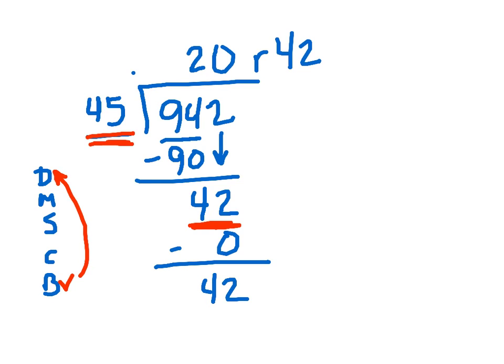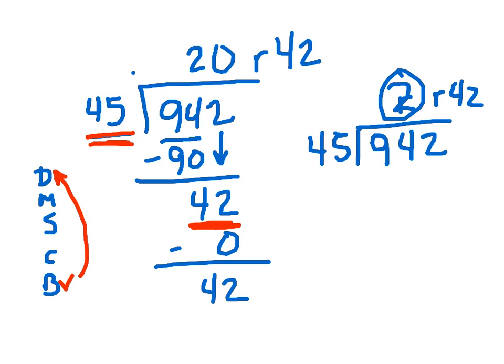Think about it, though. If you would have had that for your answer, 2 remainder 42, that does not make sense here. So 2 times 45 is 90, with the remainder of 42. It's not going to equal out to this.